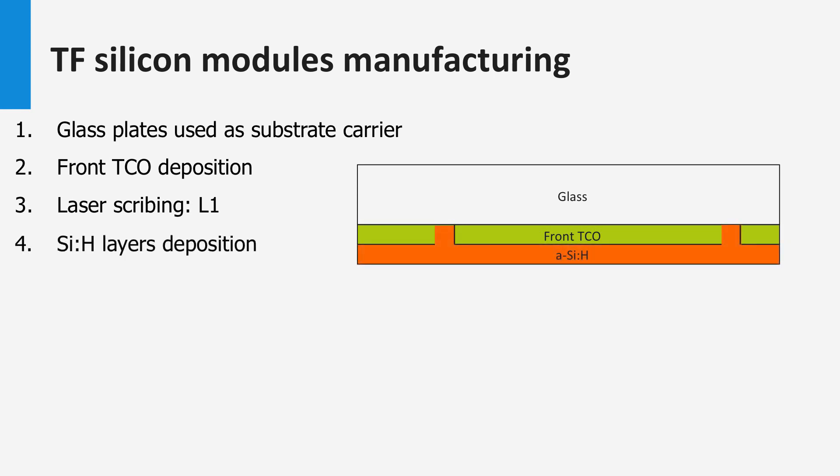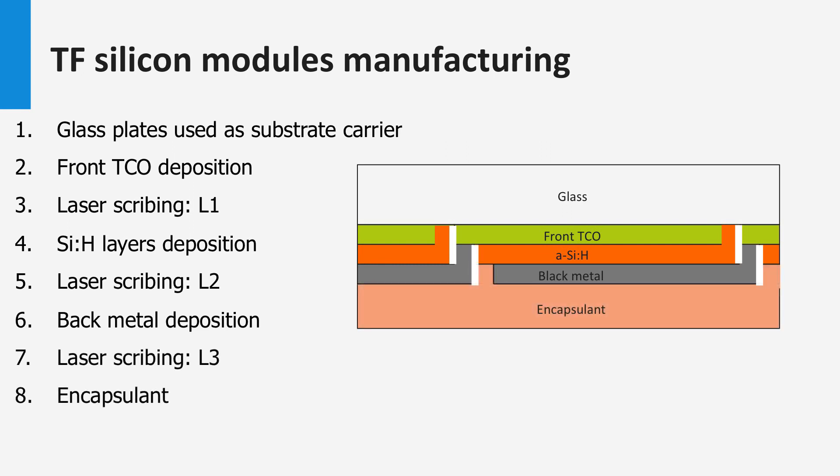On top of the TCO, the various silicon layers are deposited, making the PV active part. After the silicon process step, a second laser scribing step is made. The metal back contact is deposited, after which the last laser scribing step is used. The whole cell is finished by covering it with an encapsulant material.